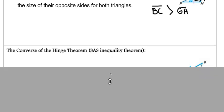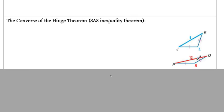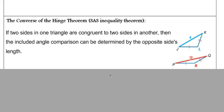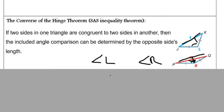The converse basically says if you have two sides congruent in one triangle to another, then the angle opposite the non-included side can be determined by the non-included side. So if JK is opposite angle L and PQ is opposite angle R, and since JK is less than PQ, then angle L is less than angle R.